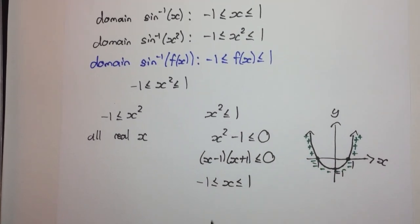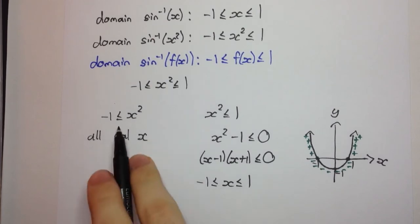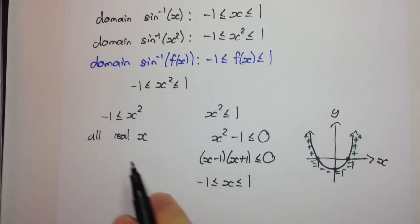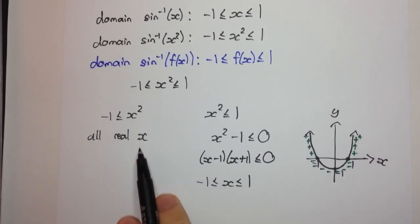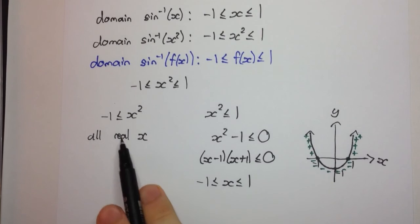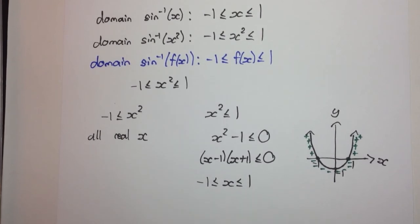So now we have our two sets, and we have to take the intersection of these two sets. So where do they overlap? Well, here it's quite obvious. This is all real x, and this all real x includes this. So therefore,